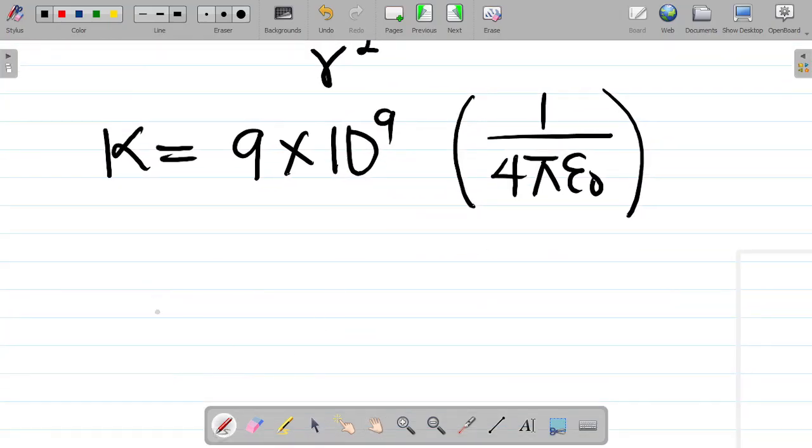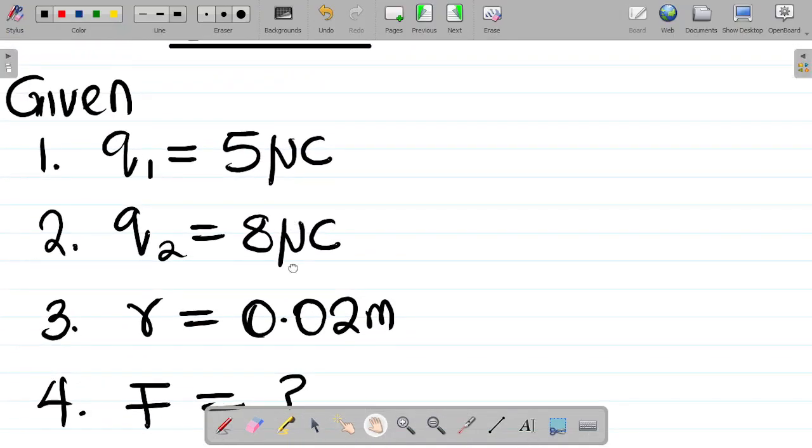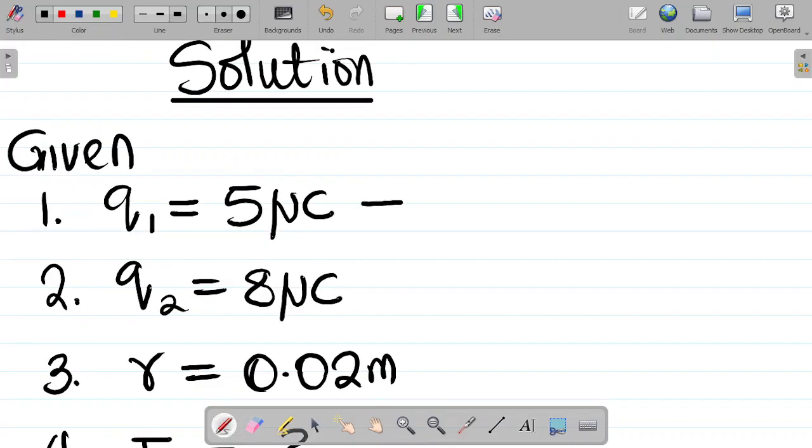So let's input values. From here, the force of repulsion, F, will be equal to K, which is 9 times 10 to the power of 9, into Q1 multiplied by Q2. Now what's Q1? Q1 is equal to 5 microcolumb,